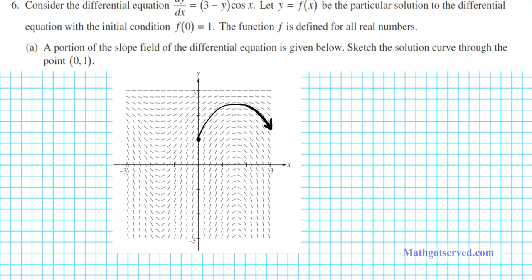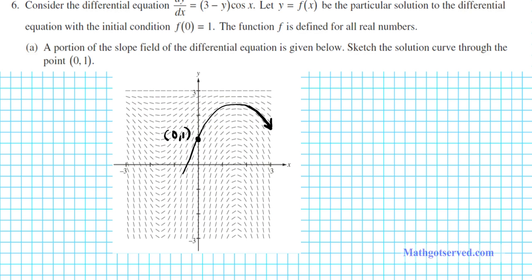The curve goes in one direction following the slope field, and then curves up. That's basically how the solution looks — just make sure it goes through the point (0, 1) and follows the general pattern of the slope field. It doesn't need to be perfectly smooth; it's a sketch giving a general idea of what the solution looks like. This is the answer to part A.